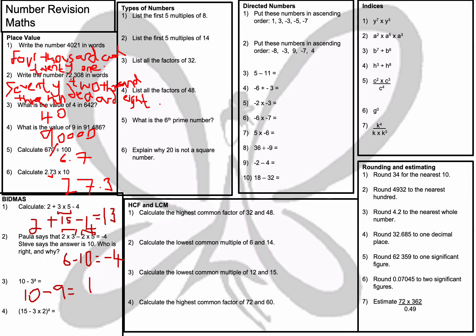Question number 4: (15 − 3 × 2) all squared. Doing the bit inside the bracket first: I do 2 times 3 first giving 6, then subtract from 15 — 15 take away 6 is 9. Then I square my answer: 9 squared means 9 times 9, which equals 81.